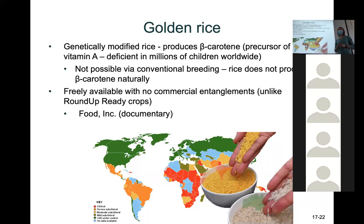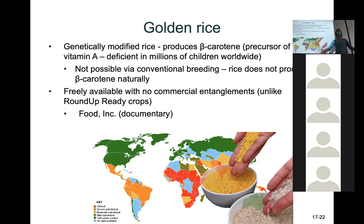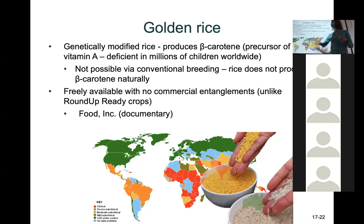The Food Inc. documentary is really interesting — it talks about the commercial aspects of these biotechnologies, especially with Monsanto, a multi-billion dollar company. There are pluses and minuses: a lot of farmers use Roundup Ready crops, but they can't harvest their own seeds. Normally you can harvest seed and replant it every year, but with Roundup Ready you have to buy new seed every single year from Monsanto. So there are some interesting and complicated commercial aspects that go along with a lot of this GM stuff.